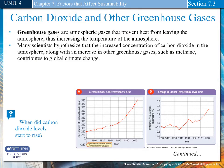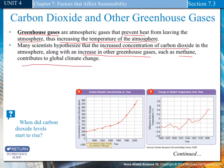Carbon dioxide and other greenhouse gases. Greenhouse gases are atmospheric gases that prevent heat from leaving the atmosphere, thus increasing the temperature of the atmosphere. Many scientists hypothesize that an increased concentration of carbon dioxide, along with an increase in other greenhouse gases such as methane, contribute to global climate change.